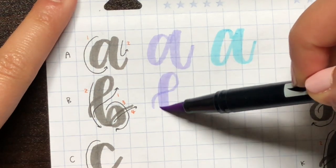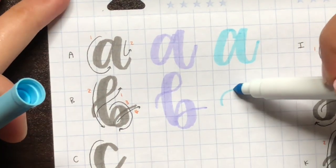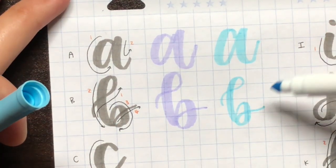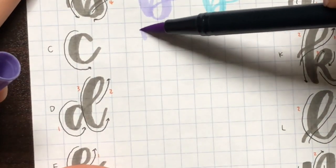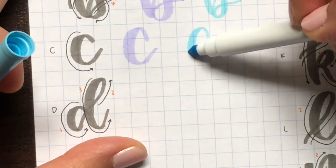With the letter B you want to create a loop first, so that includes going from the left up around and down with the thick down stroke to loop up. C is pretty self-explanatory so I'm just going to start explaining D.